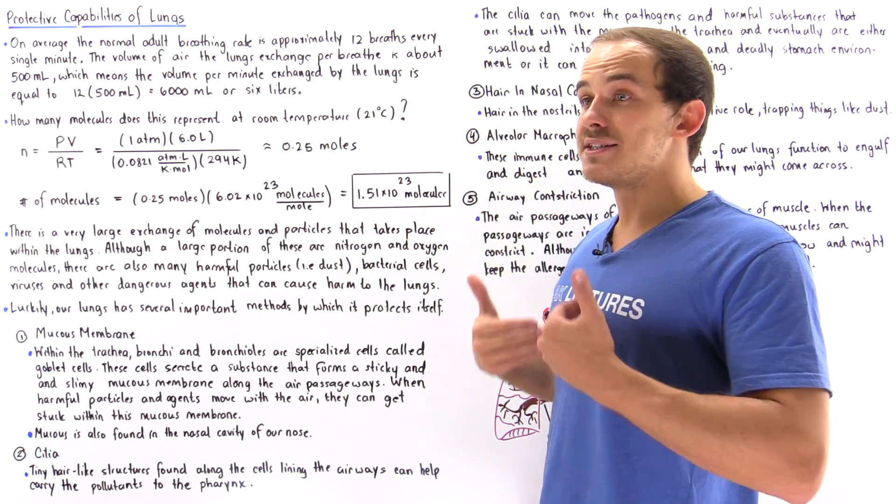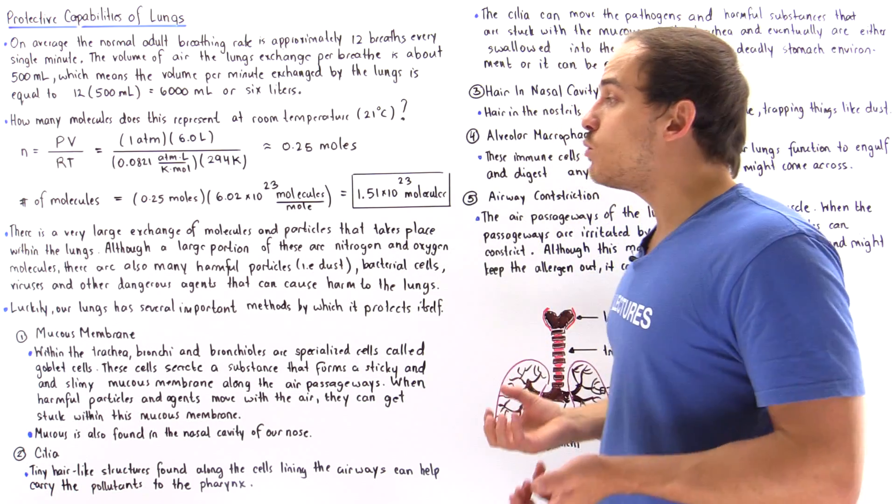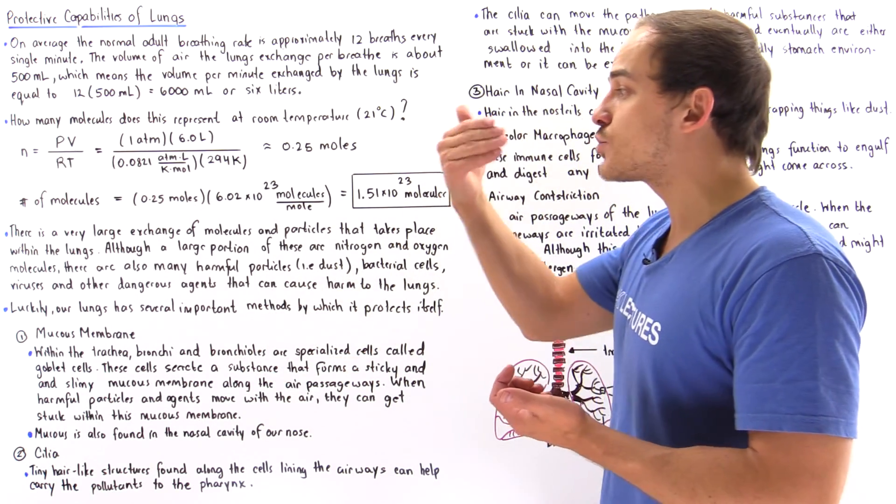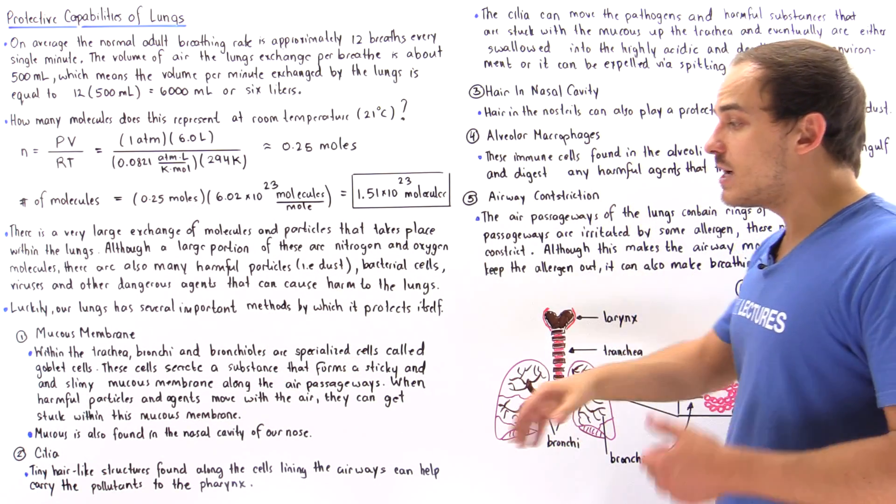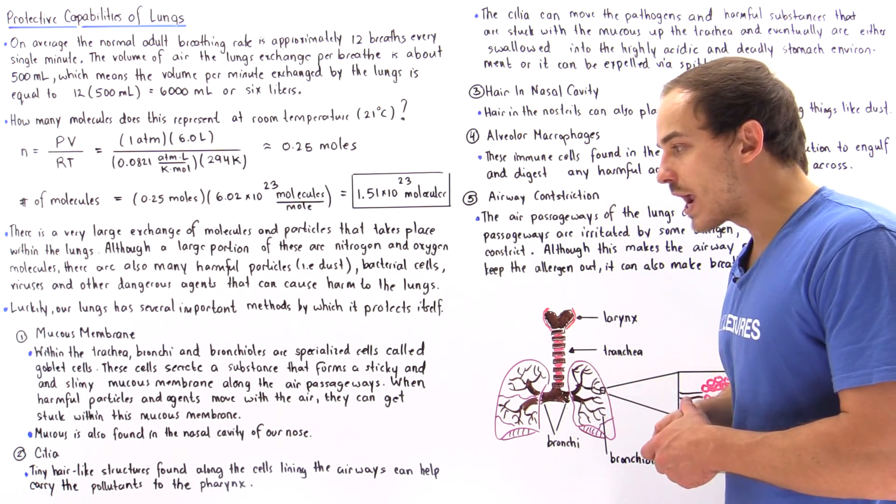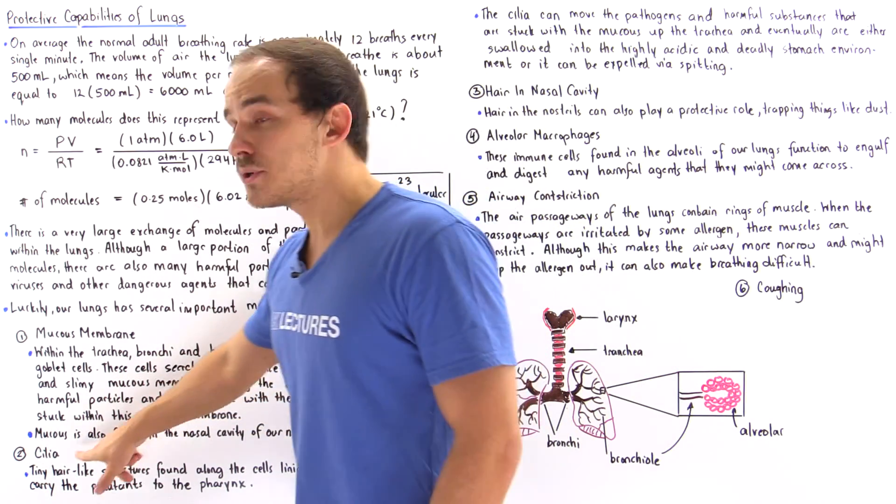This mucous membrane lines our passageways. When we breathe in the air, these harmful agents and harmful things, as they travel through with the air, can get stuck inside this mucous membrane.